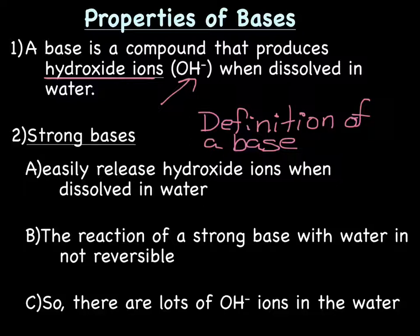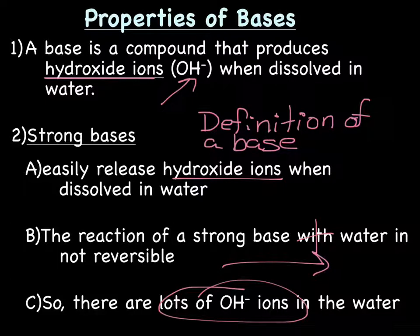We have two types of bases, strong bases and weak bases. Strong bases easily release hydroxide, or OH1 minus ions, when dissolved in water. The reaction of a strong base in water is not reversible. So if you had a strong base and water, you would have a single, unidirectional arrow. And because the hydroxides are easily dissolved in water, and because the reaction is one way, you're going to end up with lots of OH1 minus ions in the water. That's what makes a strong base a strong base.